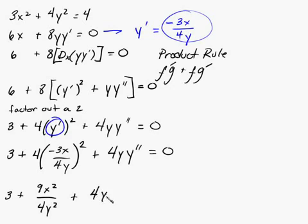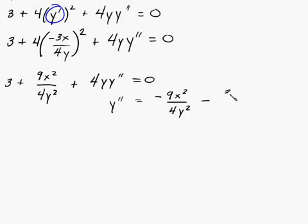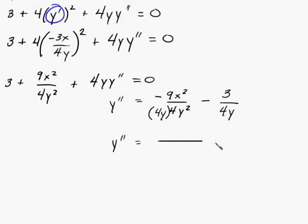So this is going to be plus 4y·y'' equal to 0. Let's move everything over to the right. I'm going to get y'' equal to — I'll subtract everything else and divide by 4y — so I'll end up with negative 9x² over 4y² minus 3, and dividing by 4y basically multiplies the denominator by 4y. Let me go ahead and work this a little bit. I want to combine all this into one fraction. I'll make one big fraction bar with 16y³ as the denominator.